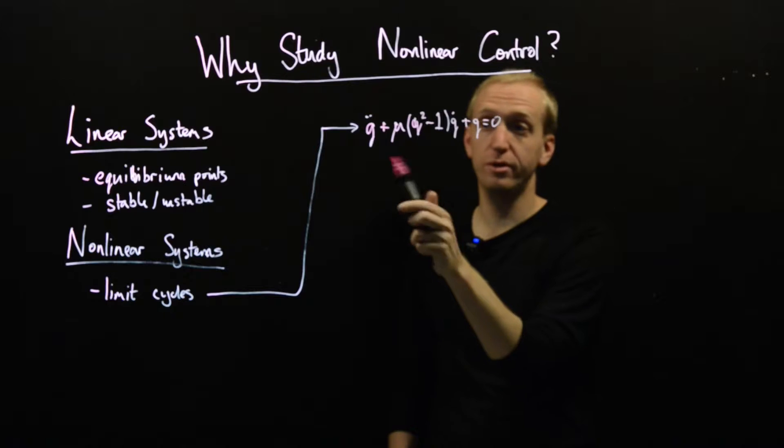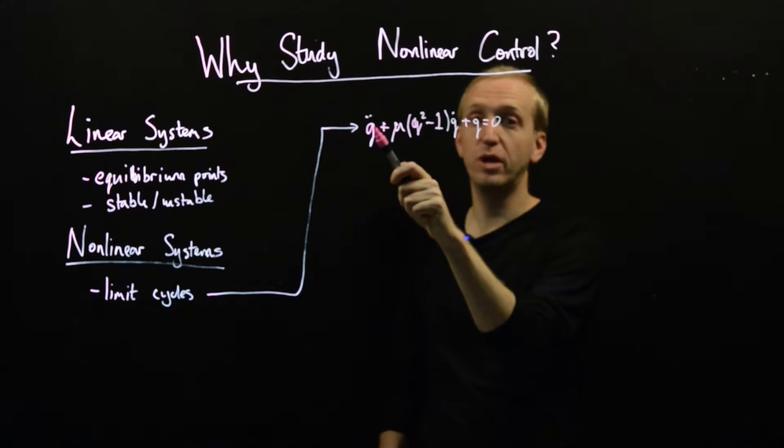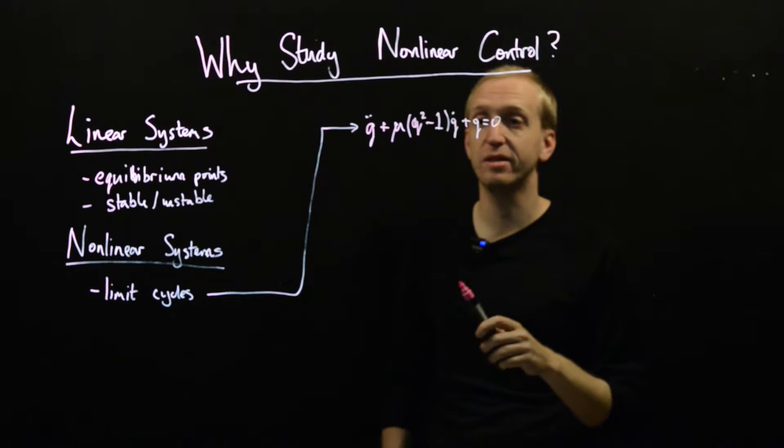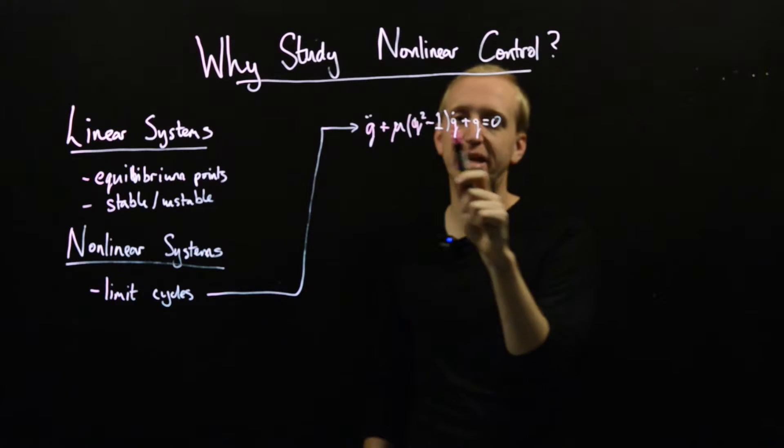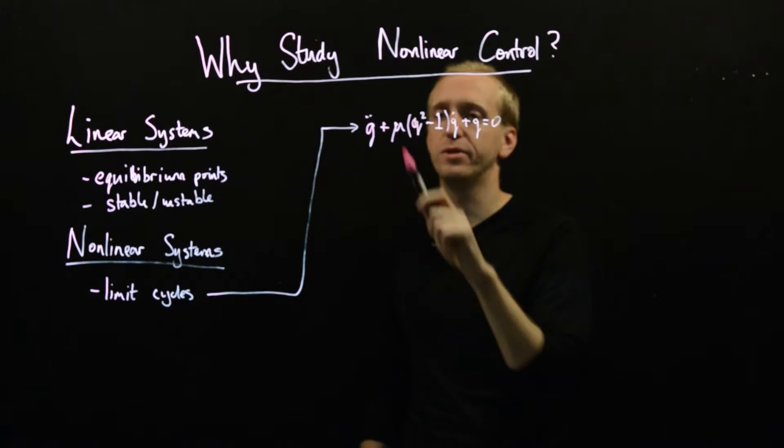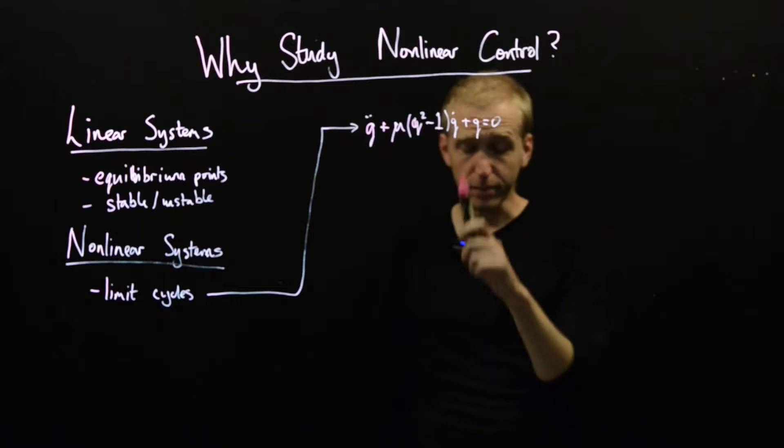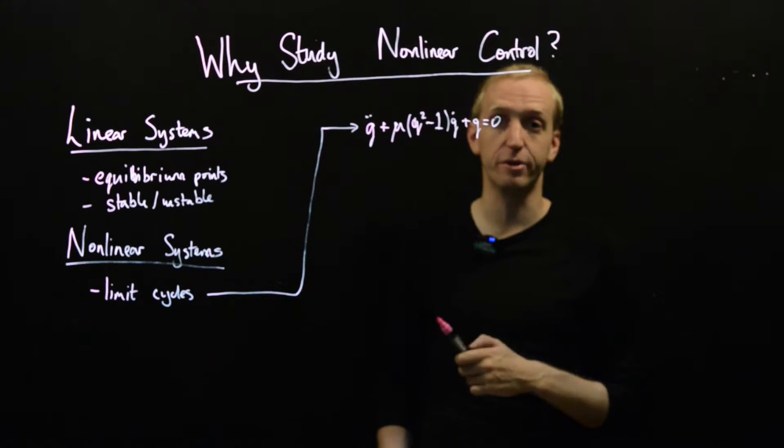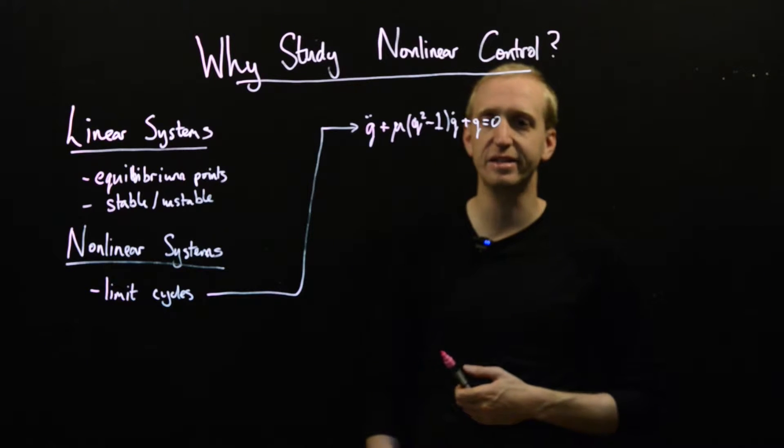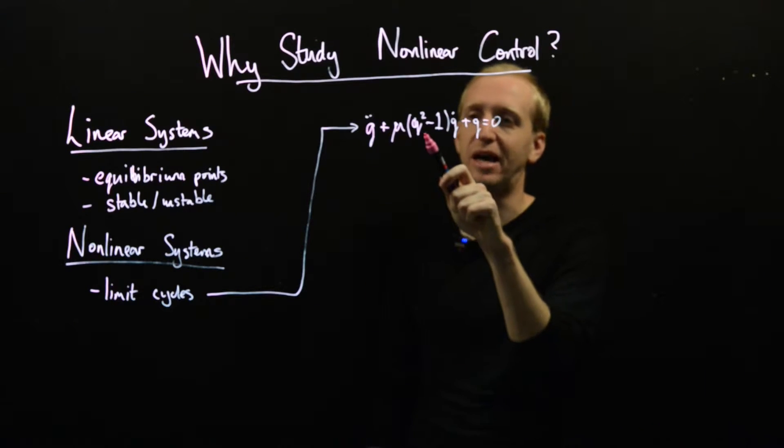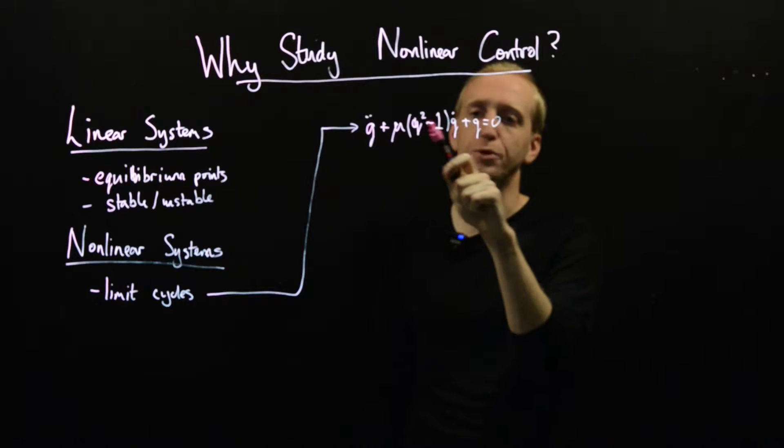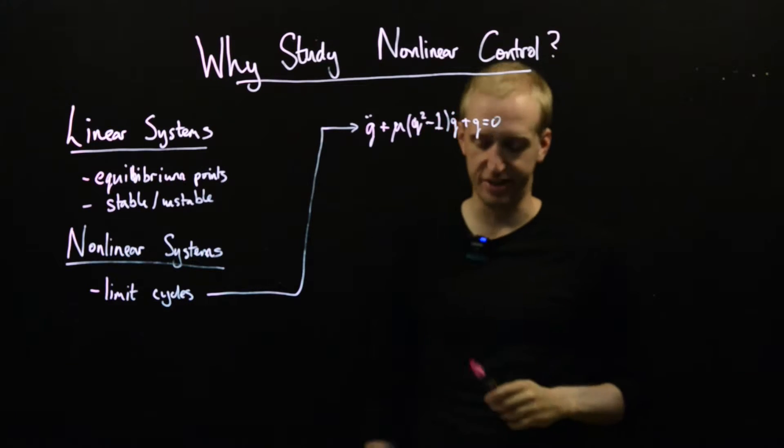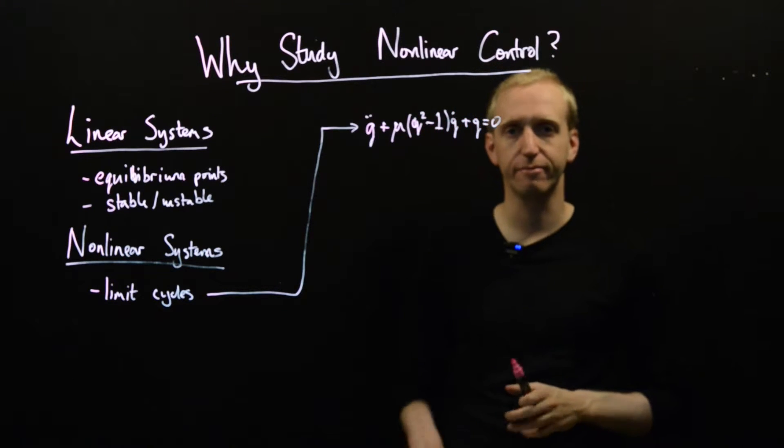This is q squared minus 1 q dot plus q is equal to 0. So, this is just a differential equation in the variable q. q double dot is its second derivative with respect to time and we've got some kind of mix of q dots and q squareds and q's and q double dots. And this is not a linear equation, and we'll explain a little bit more why that is later. But the giveaway sign is that you have q's multiplied with other stuff or squares and this is a typical non-linear type equation.